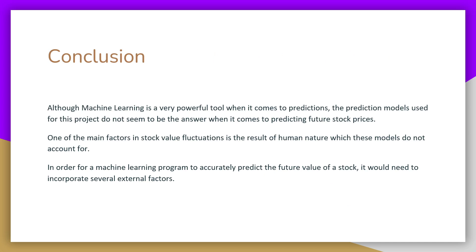Although machine learning is a very powerful tool when it comes to predictions, the prediction models used for this project do not seem to be the answer when it comes to predicting future stock prices. One of the main factors in stock value fluctuations is the result of human nature, which these models do not account for. In order for a machine learning program to accurately predict the future value of a stock, it would need to incorporate several external factors.